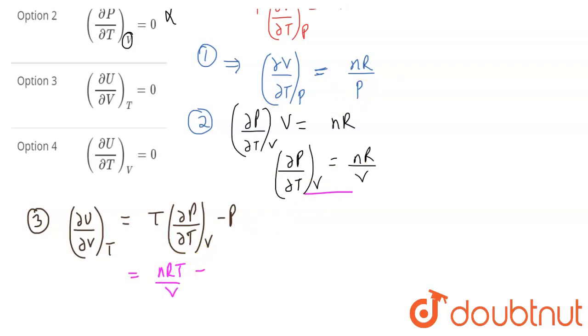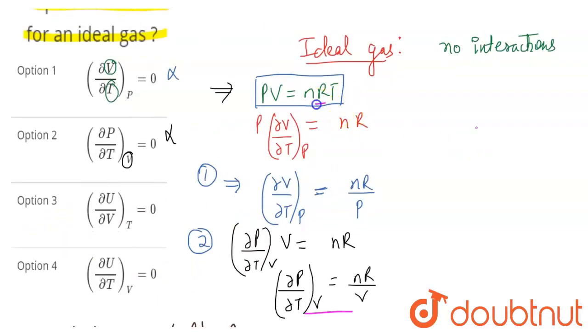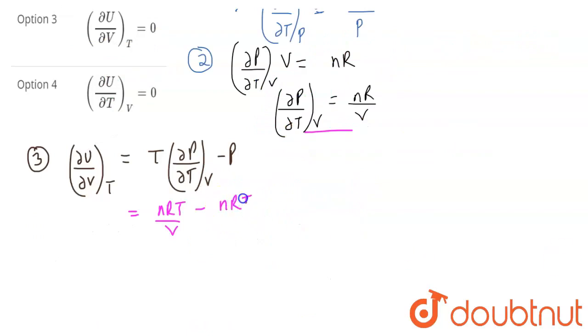And PV equals nRT. So this is equal to nRT by V, so this will be solved, so this will be 0. So this will be correct, so the option will be correct.